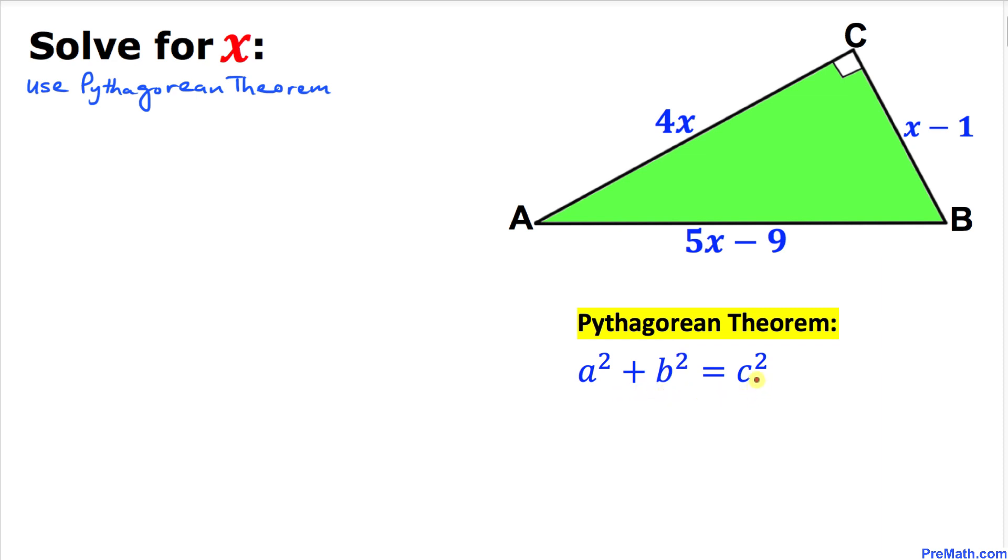Since this is a 90 degree angle, this longest leg I'm going to call c, this side I'm going to call a, and this side lowercase b. Here's our Pythagorean formula: a squared plus b squared equals c squared. Let's fill in the blanks.